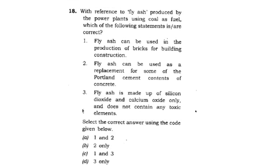Next question: With reference to fly ash produced by power plants using coal as a fuel, which statements are correct? First: fly ash can be used in the production of bricks for building and construction. Second: fly ash can be used as a replacement for some Portland cement content in concrete. Third: fly ash is made up of silicon dioxide and calcium oxide only and does not contain any toxic elements. Fly ash does contain toxic elements, so option 3 is incorrect. Options 1 and 2 are correct, making the right answer Option A.